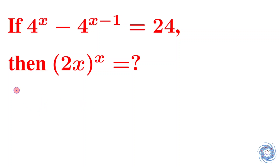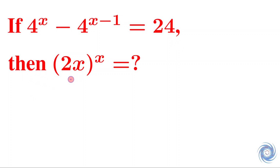The question is: if 4 to the power x minus 4 to the power x minus 1 is equal to 24, then find the value of 2x whole to the power x.